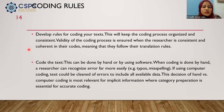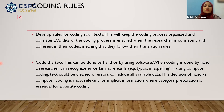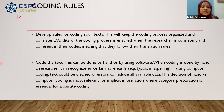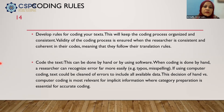We have to develop the rules for coding a particular text. This will keep the coding process organized and consistent. Validity of the coding process is assured so that no researcher bias crops up, and the researcher remains consistent throughout the research process. The same codes should be available because once the research is published, it becomes helpful for future researchers to refer to and develop their own study.